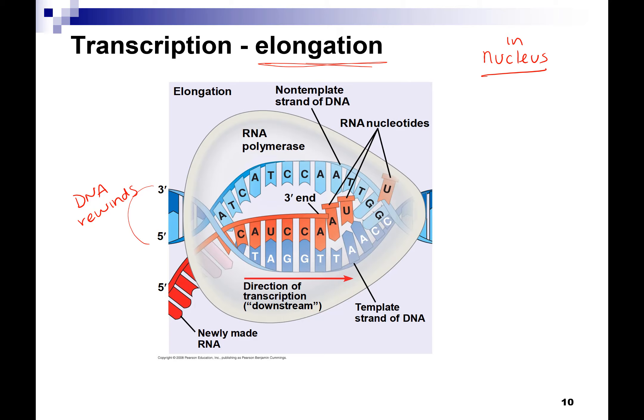Our DNA is our stable genetic material. I like to think of it like a cookbook — that's where all the recipes are. Transcription would be you copying one of the recipes down and taking it to your friend's house to cook dinner. You don't want to mess with that original cookbook. So we leave the DNA, make a copy of RNA, and take that. If something happens to the RNA copy, you still have the genetic information stored back home in the DNA.